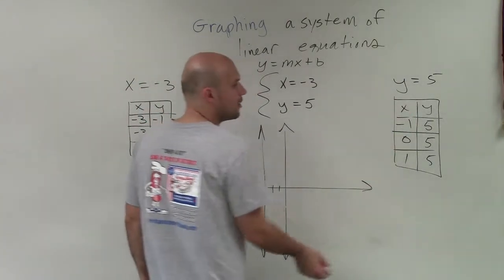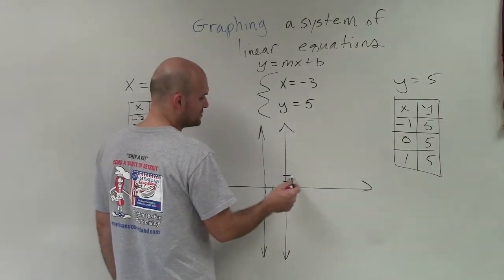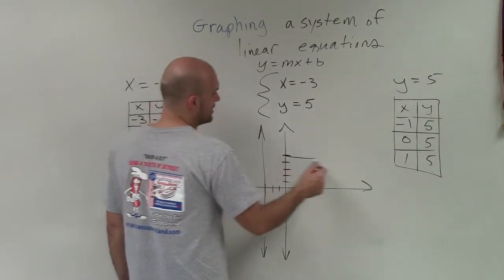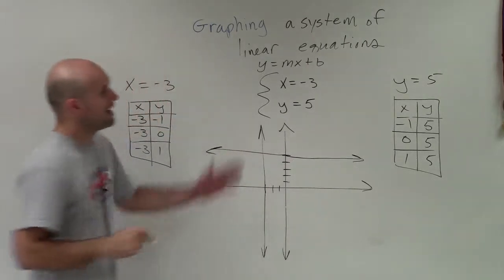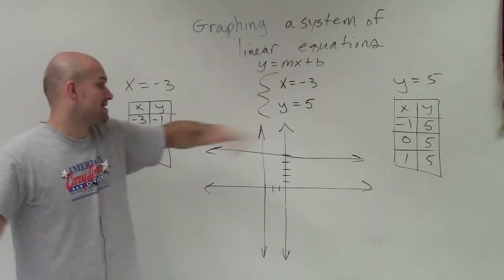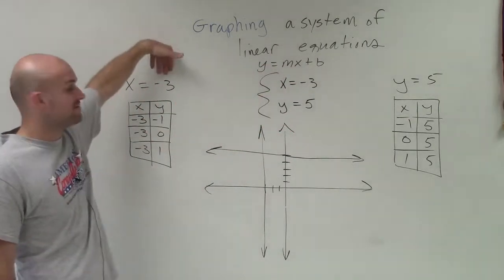Then I say y always equals 5, so I go up to 5: 1, 2, 3, 4, 5, and create a horizontal line. Remember, when y equals a value, you're always going to have a horizontal line. When x equals a value, you're always going to have a vertical line.